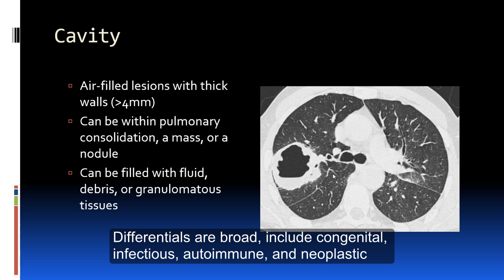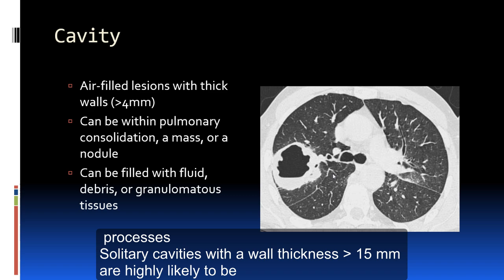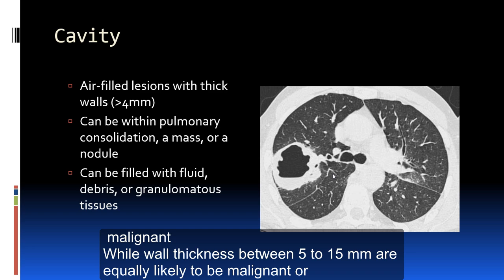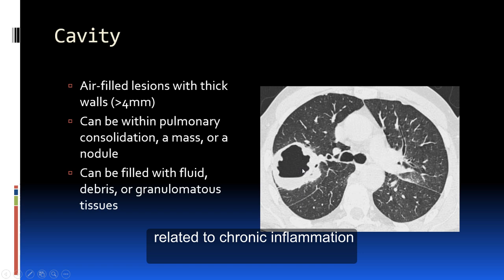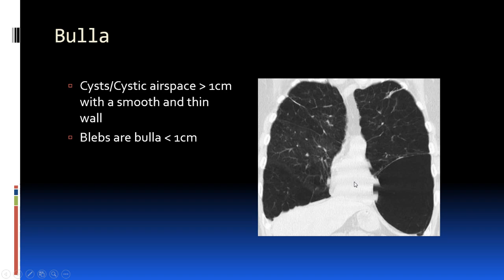A cavity is an air-filled lesion with a thick wall more than 4 millimeters. It can be caused by pulmonary consolidation, a mass, or lung nodules, and inside it can contain fluid, debris, or granuloma tissue. A cavity is usually formed by a consolidation or mass with necrotic tissue that drains out, causing this thick-wall appearance.